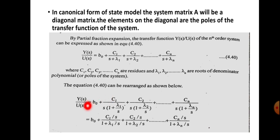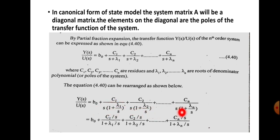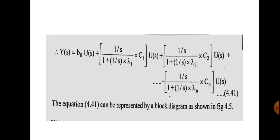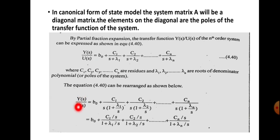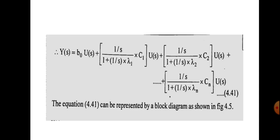This equation can be rearranged by taking s outside from every term. So you get 3/(s·(1 + λ1/s)) and similarly for other terms, with s coming to the numerator side. Multiplying the denominator to the right-hand side, Y(s) becomes b0·U(s) plus the remaining terms multiplied by U(s). Each term is in the form G(s)/(1 + G(s)·H(s)), where G(s) = 1/s and H(s) = λ1.